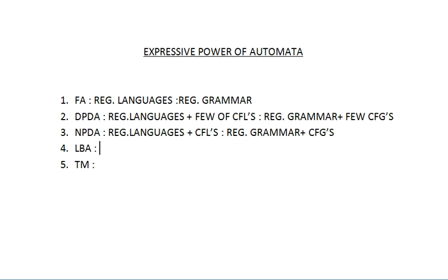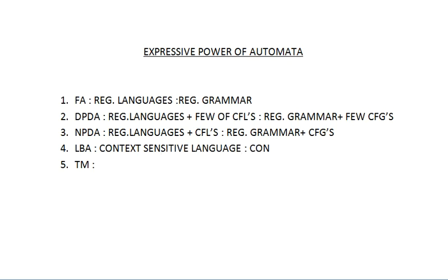Next is Linear Bounded Automata (LBA). LBA accepts context-sensitive languages (CSL), and the corresponding grammar is context-sensitive grammar. So we have the acceptor (LBA), the language (context-sensitive language), and the grammar (context-sensitive grammar).